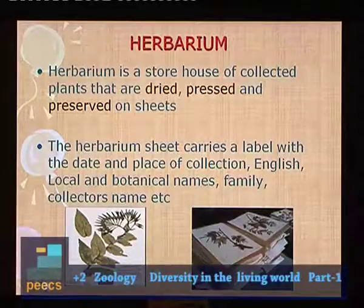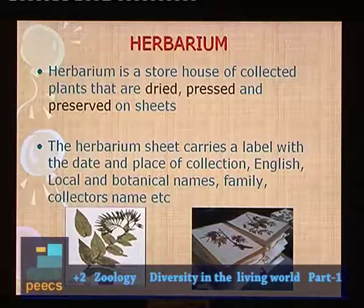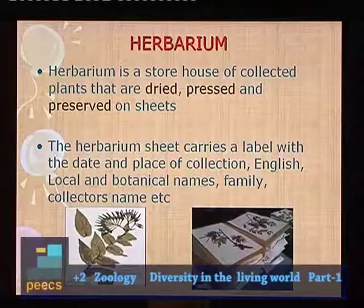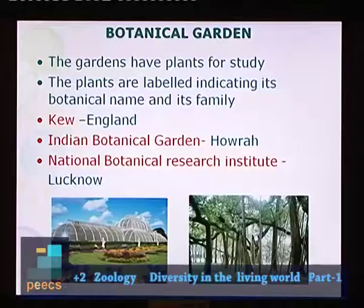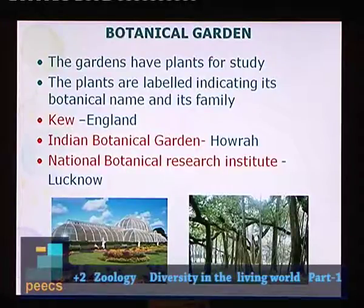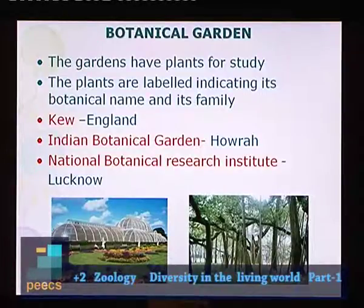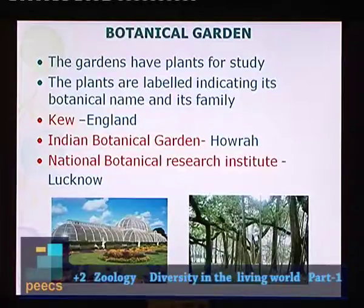Herbarium sheets carry a label with date and place of collection, English name, local name, botanical name, family name and collector's name. Another taxonomical aid is the botanical garden, where plants are grown for study purposes and labeled with botanical name and family. Famous examples include Kew Garden in England, Indian Botanical Garden in Howrah (West Bengal), and National Botanical Research Institute in Lucknow.